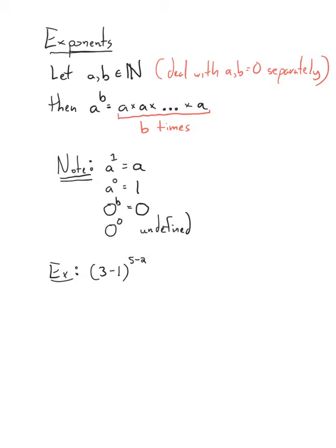Now we're going to talk about exponents. Exponents have to do with multiplication and division. Just like how multiplication was repeated addition, exponents are repeated multiplication. So if we have two natural numbers a and b, the notation a to the power of b means take a and multiply it by itself b times.